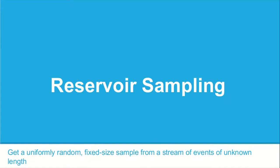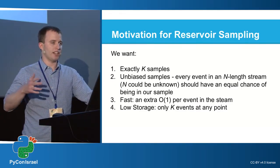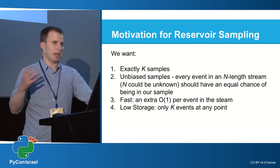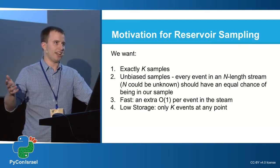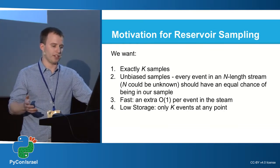The classic answer to this problem is reservoir sampling. It gives us a uniformly random k-sized sample from a stream of events of unknown length. It's a beautiful, simple algorithm. It gets us exactly k samples — say k is a thousand — it's unbiased, which means every single event in the stream has an equal probability of being in the sample, or the reservoir as we call it, at the end of the stream or whenever we choose to look at it.